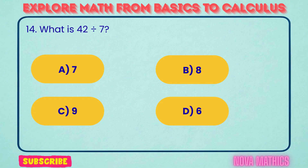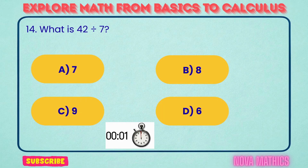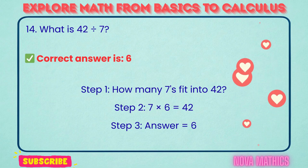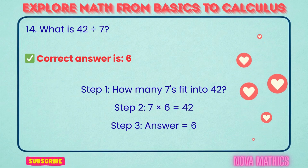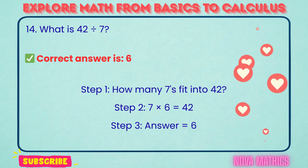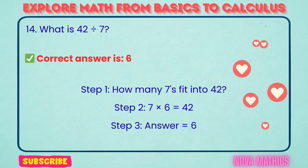14. What is 42 divided by 7? Correct answer is 6. 42 divided by 7 equals 6. We find this because 7 times 6 is 42.